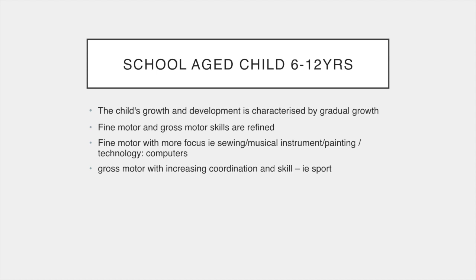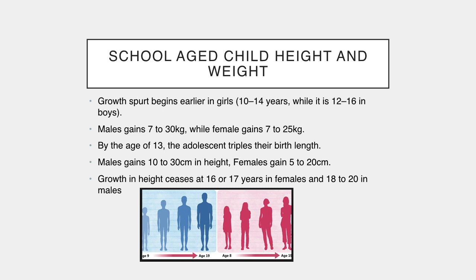The school-aged child, six to twelve years of age, grows and develops more slowly with a gradual refining of gross and fine motor skills. Development has the greater potential during this stage as motor skills are employed to learn and establish a range of abilities such as playing a musical instrument or participating in sport. In the later school years, there is another growth spurt, and with the onset of puberty, this growth spurt differs between boys and girls. Boys can gain 7 to 30 kilograms and 10 to 30 centimetres in height, while girls gain 7 to 25 kilograms and 5 to 20 centimetres. Boys usually start their growth spurt later than girls, and girls cease growth at 16 to 17 years whereas boys continue growth up to 18 to 20 years.